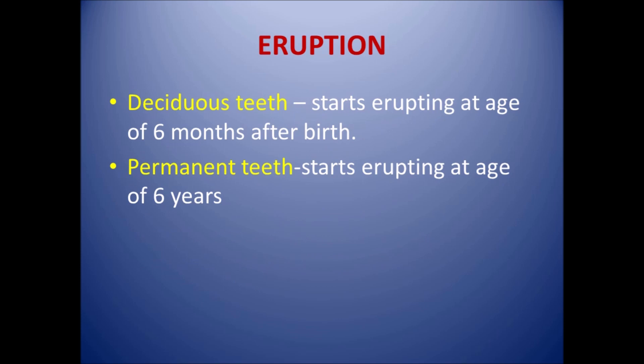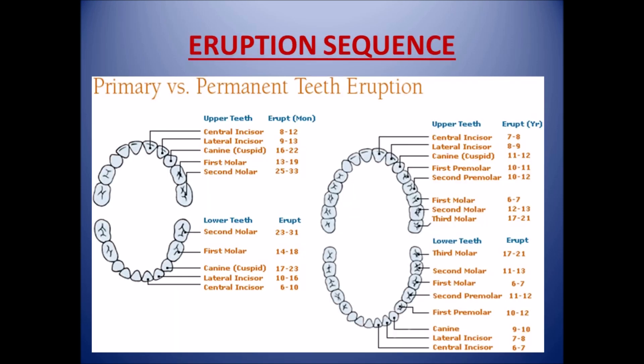Coming to the eruption, deciduous teeth start erupting at the age of 6 months after birth, while permanent teeth start erupting at the age of 6 years. In the primary set, the mandibular central incisor is the first tooth to erupt at 6 to 10 months, followed by maxillary central incisor at 8 to 12 months, then lateral incisors. Canines erupt at 16 to 23 months, followed by first molar and second molar. The second molar is the last tooth to erupt in deciduous dentition.